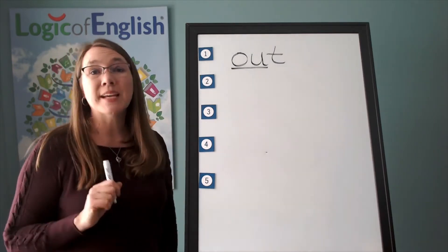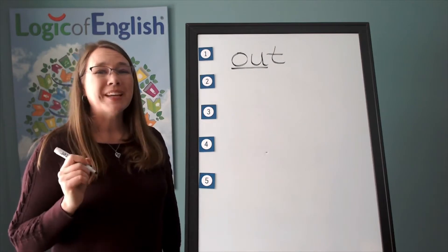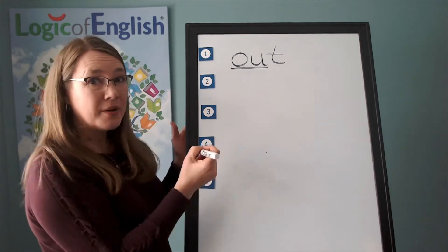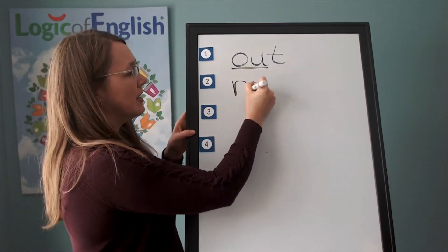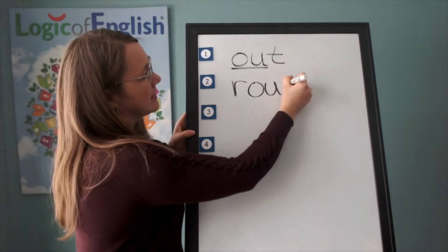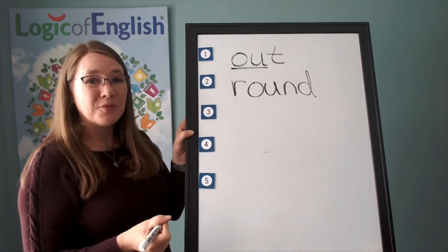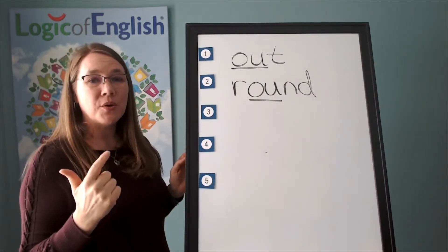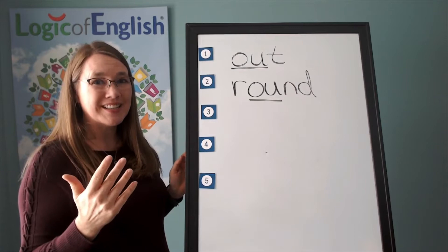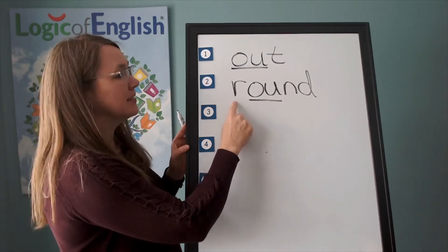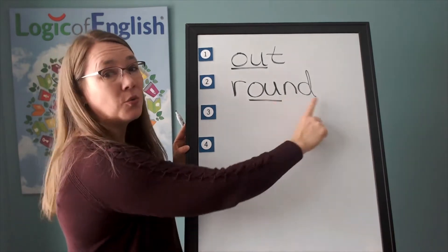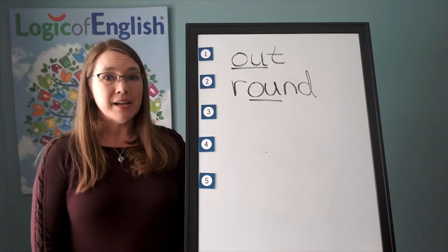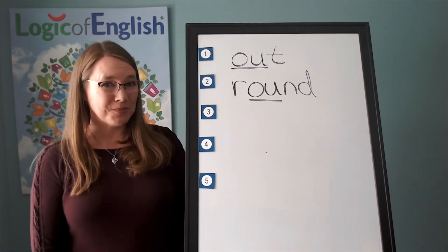Good job sounding it out. Sounding it out is important because it makes sure that you get all the sounds captured as you're writing it. Go ahead and help me write it now. Er, ow, n, d. And how will we mark it? We'll underline the ow. What sound of ow, o, oo, uh, uh did this say? It said ow. Its first sound. Let's sound it out.